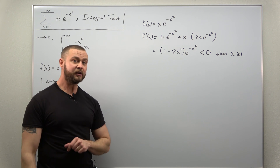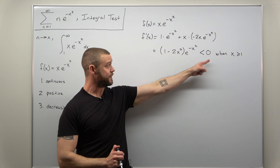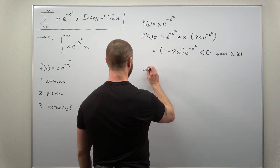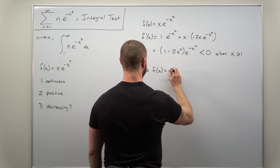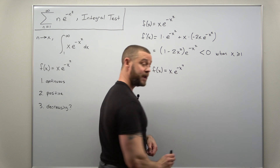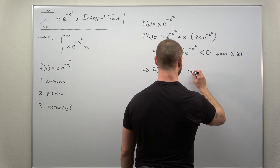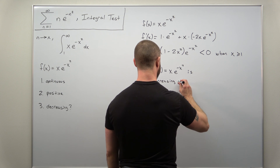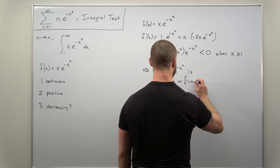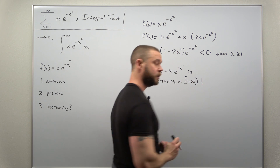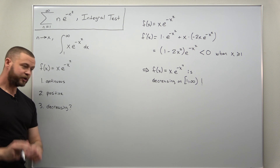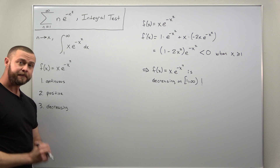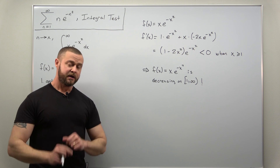Since the derivative is negative on that interval, the function f(x) = x times e to the negative x squared is decreasing on the interval from 1 to infinity. We have now verified that the decreasing condition is satisfied, so we can go ahead and apply the integral test.